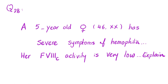Let me answer the question from the previous video. A five-year-old female, 46XX, has severe symptoms of hemophilia. Her factor VIIIC activity is very low. Please explain. In the comments section, someone mentioned Turner syndrome. Turner is absolutely right — if I have Turner syndrome, I have only one X, so an X-linked recessive disease will also affect me, even though I was supposed to be a carrier.